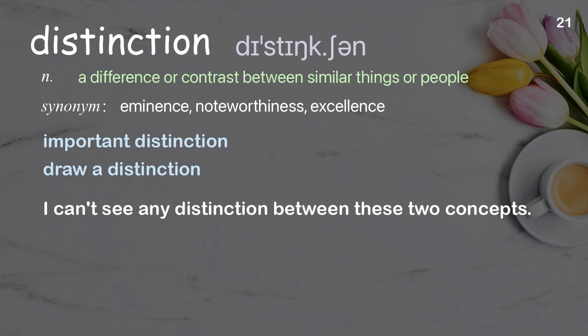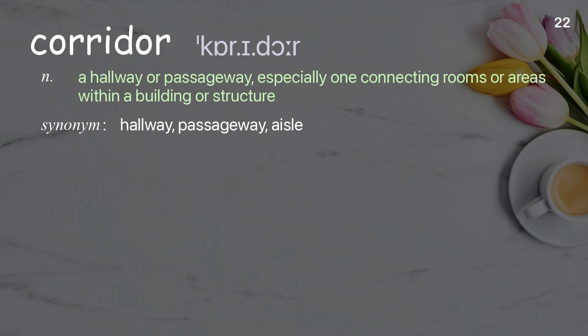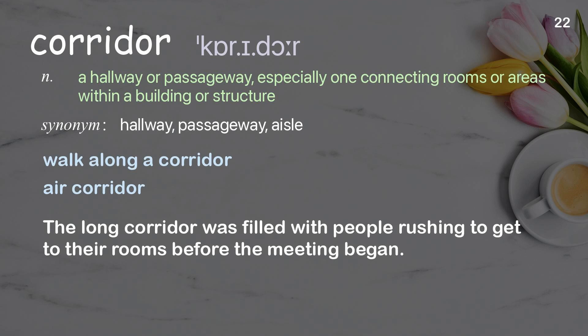Corridor: a hallway or passageway, especially one connecting rooms or areas within a building or structure. Examples: walk along a corridor, air corridor. The long corridor was filled with people rushing to get to their rooms before the meeting began.